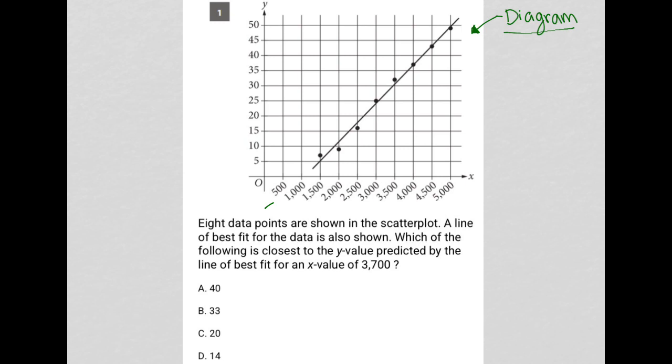We see we have our x-axis with values that seem to be separated by 500, and we have values here on the y-axis that are separated by 5. So each unit is 5 units.